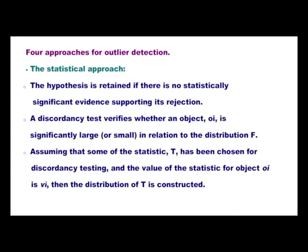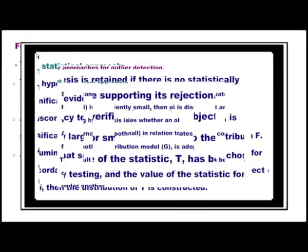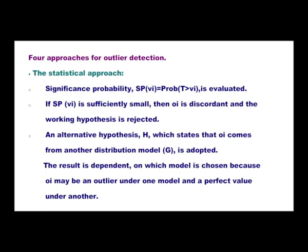A discordancy test verifies whether an object o_i is significantly large or small in relation to distribution f. Assuming some statistic t has been chosen for discordancy testing and the value of the statistic for object o_i is v_i, the distribution of t is constructed. The significant probability, SP(v_i), is given by P(t > v_i) and is evaluated. If SP(v_i) is sufficiently small, then o_i is discordant and the working hypothesis is rejected, meaning the alternative hypothesis H' — that o_i comes from another distribution model g — is adopted. The result is dependent on the chosen model, as o_i may be an outlier under one model and a perfect value under another.